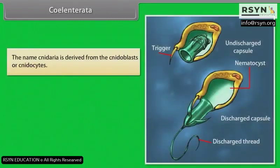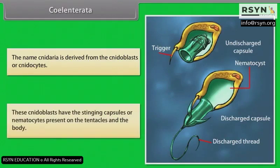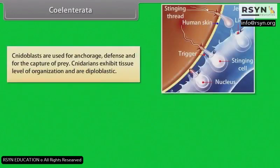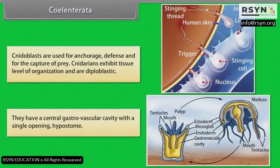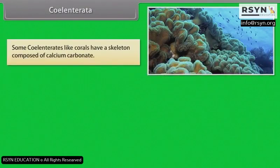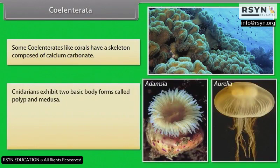The name cnidaria is derived from the cnidoblasts or cnidocytes. These cnidoblasts have the stinging capsules or nematocysts present on the tentacles and the body. Cnidoblasts are used for anchorage, defense and for capture of prey. Cnidarians exhibit tissue level of organization and are diploblastic. They have a central gastrovascular cavity with a single opening called hypostome. Some cnidarians, like corals, have a skeleton composed of calcium carbonate. Cnidarians exhibit two basic body forms called polyp and medusa.